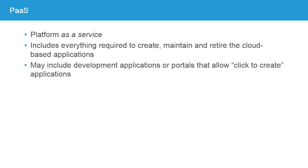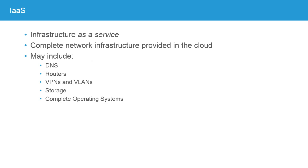The next is PaaS, or Platform as a Service. There's some debate about what's included in the platform, so if you're looking to purchase one, you need to understand exactly what the provider considers part of the platform. In its purest sense, Platform as a Service includes everything required to create, maintain, and eventually retire cloud-based applications — including development applications or portals that allow for click-to-create applications. Infrastructure as a Service, or IaaS, takes the idea further, moving all of the network infrastructure required for providing that service into the cloud.